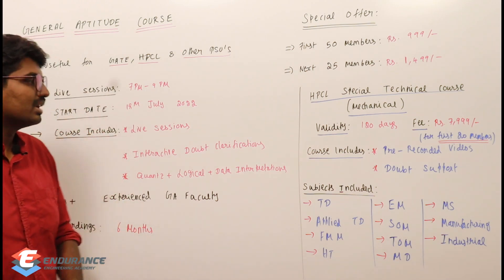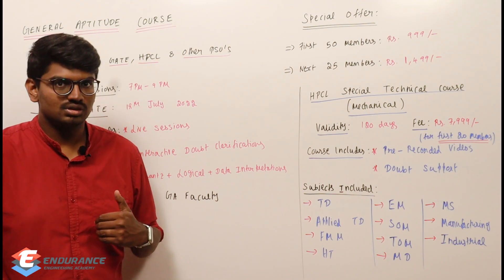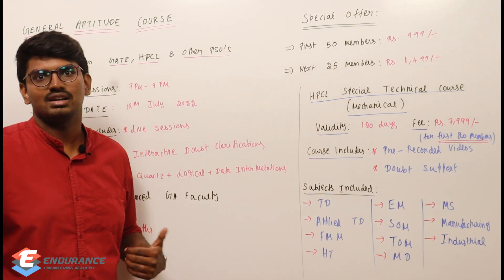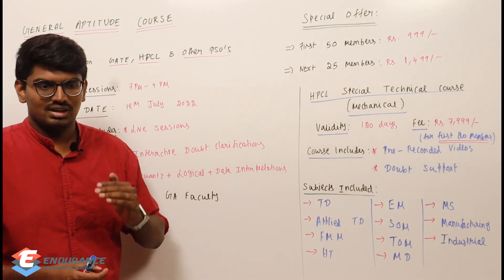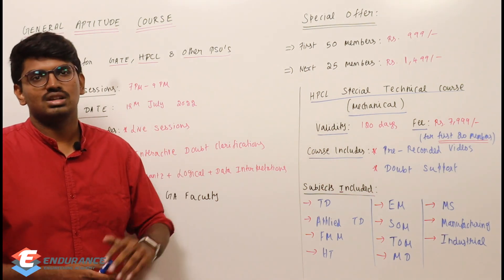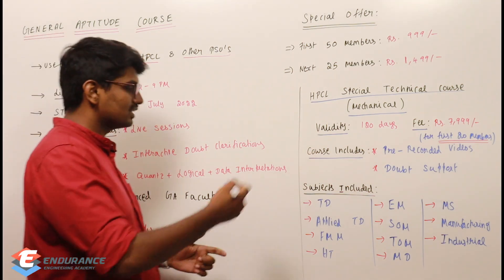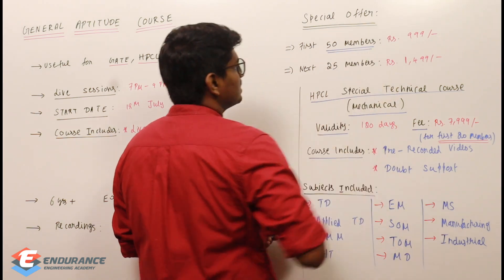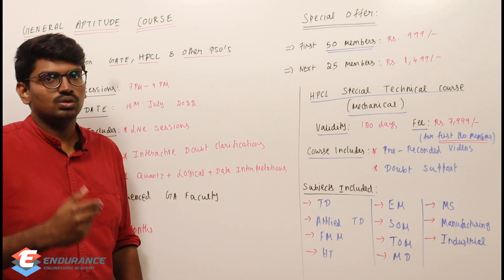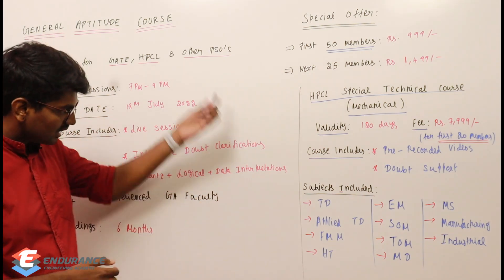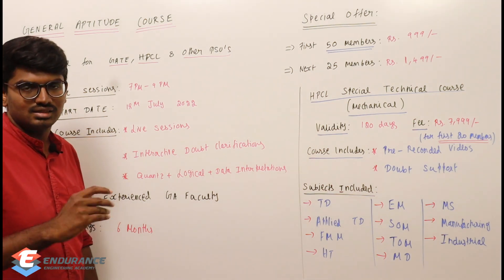Why are we launching this course now? There is a launching offer. This is the first time we are doing a general aptitude course and I have recruited a faculty for it. Since we are launching for the first time, there is an initial offer. For the first 50 members who register, the course fee is Rs. 999. It is just Rs. 999, that is basically Rs. 1000.